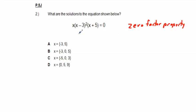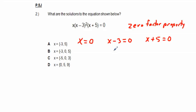We take each factor and set it equal to zero: x = 0, then x - 3 = 0 gives x = 3, and x + 5 = 0 gives x = -5. Our answers are -5, 0, and 3. If an answer choice does not have -5, it's wrong. Answer choices A, B, and D don't have -5, so C (negative 5, 0, 3) is our only correct answer — quite an easy problem.